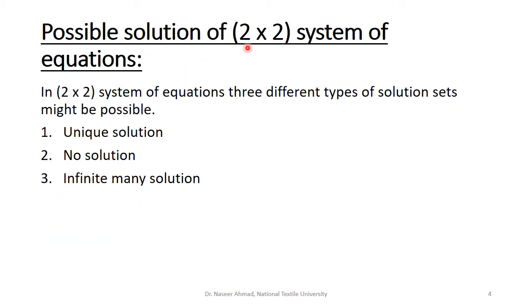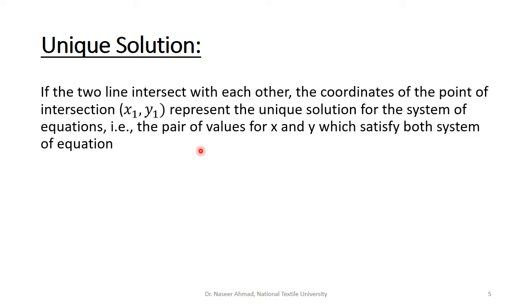In a two-by-two system of equations, the number of equations is two and there are two variables, x and y. There are three different types of solution sets possible: a unique solution, no solution, or infinite solutions. For a unique solution, if the two lines intersect each other, the coordinates of the point of intersection (x1, y1) represent the unique solution — the pair of values of x and y which satisfy both equations.